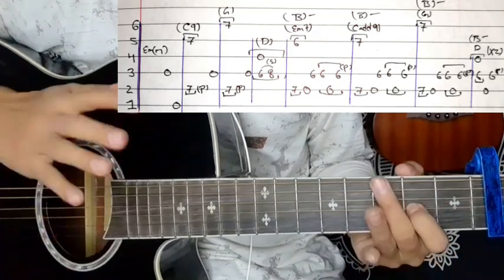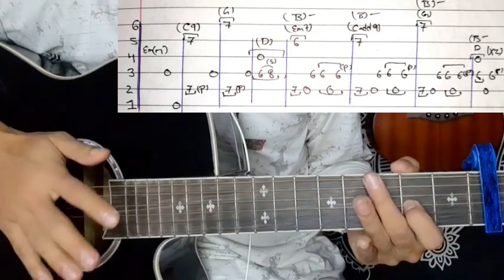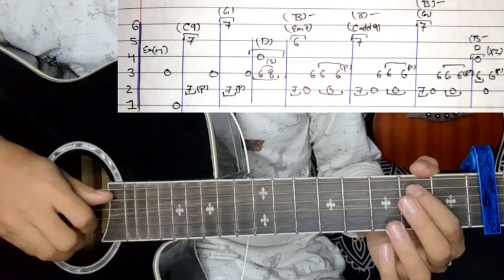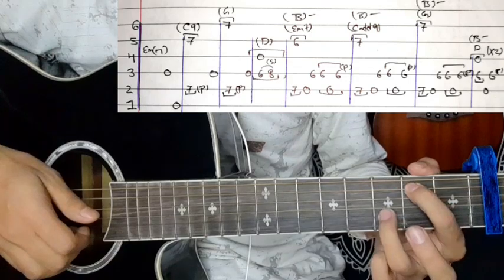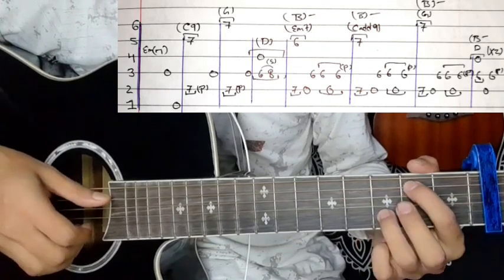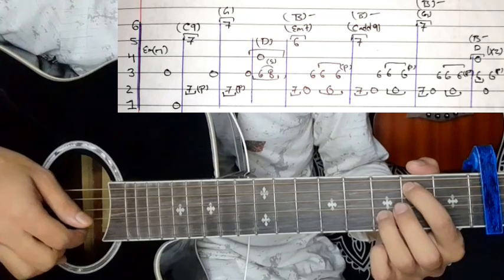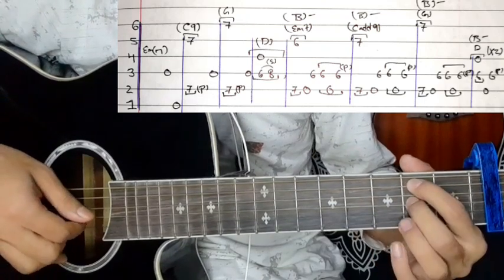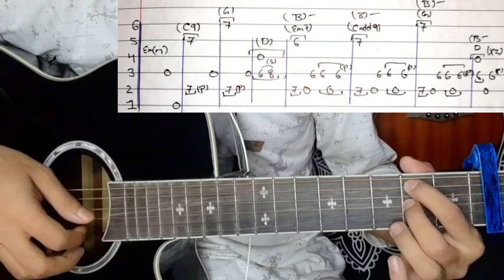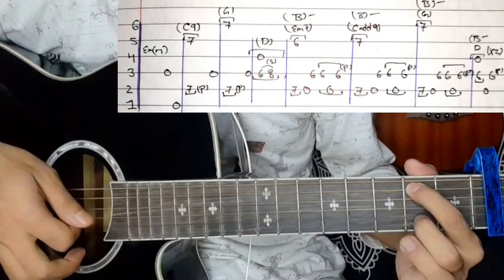Now for the E-7 chord section: fifth string goes to 6, second string goes to 7. The picking pattern is 5-2, then second string open, fourth string 6, then 6 on the second string open. Finally pull-off on the sixth fret.